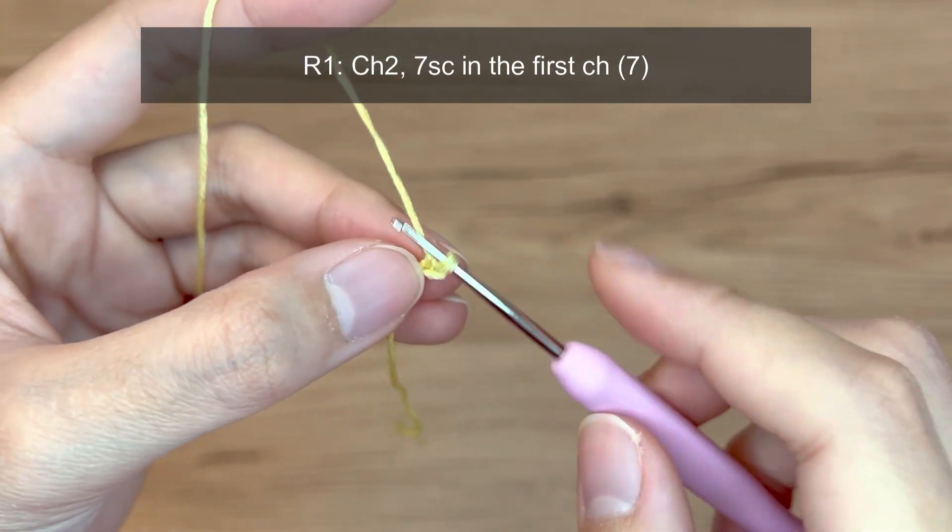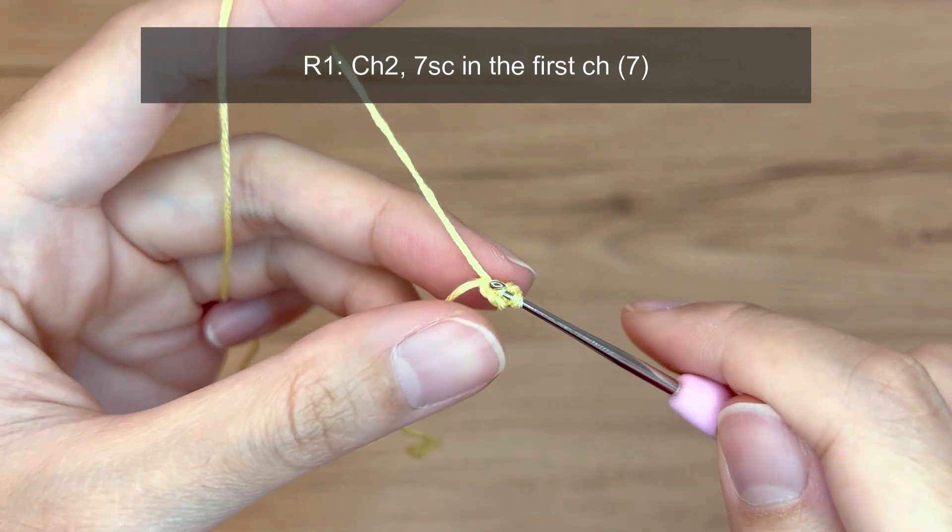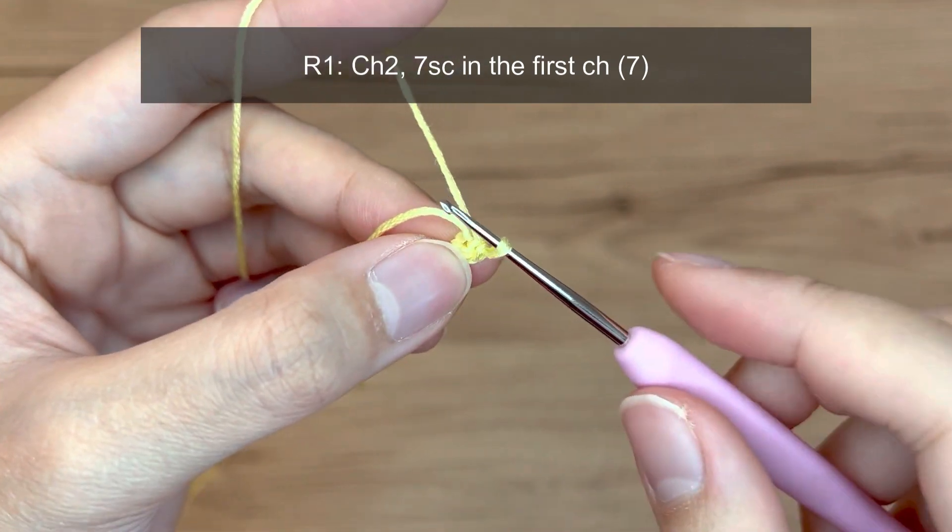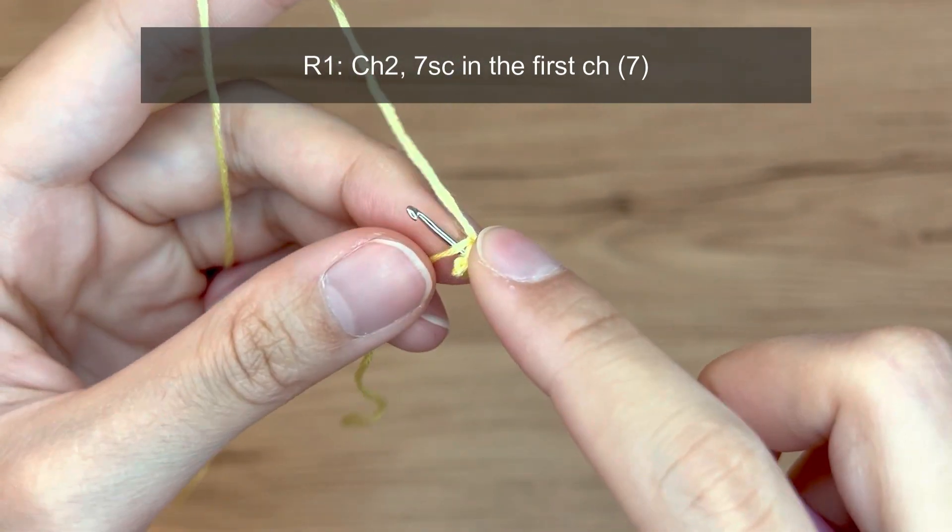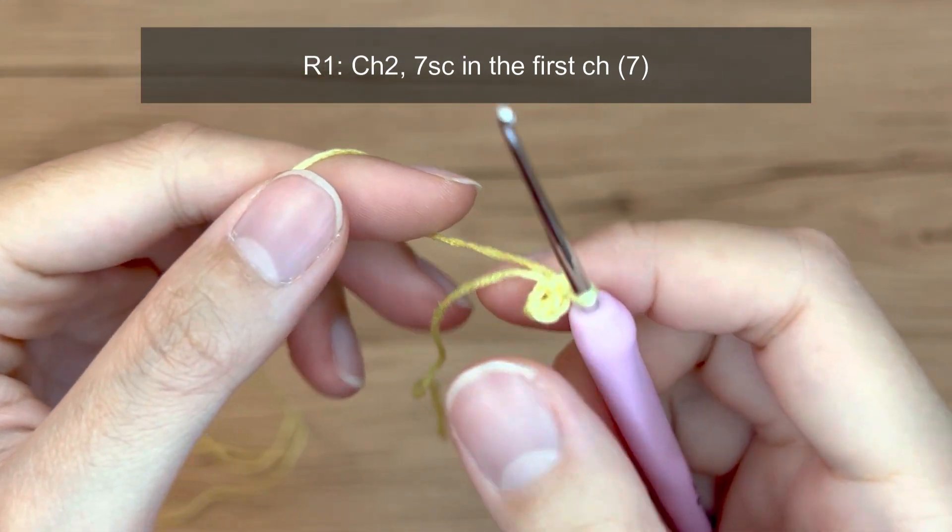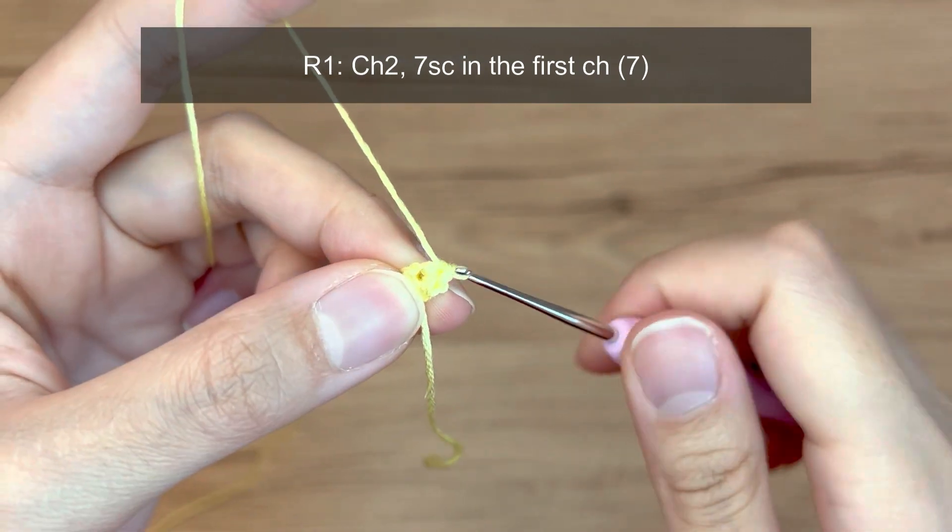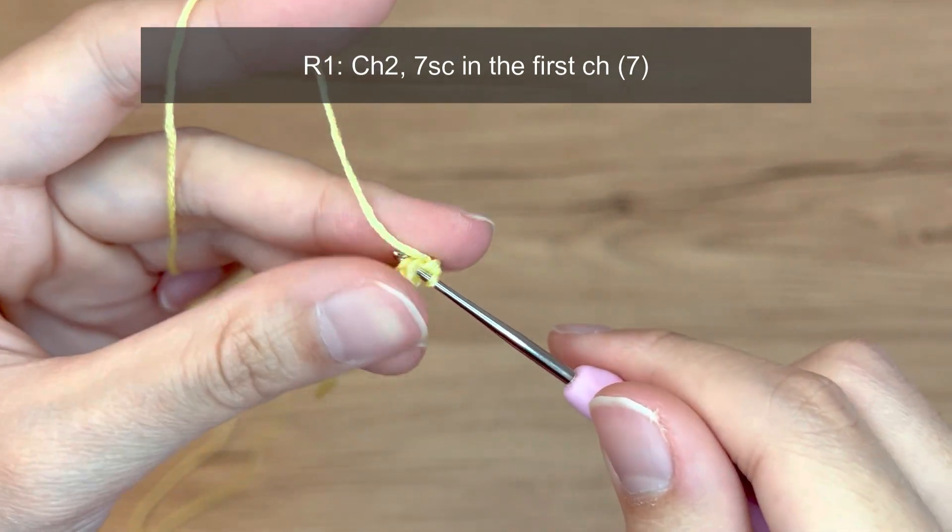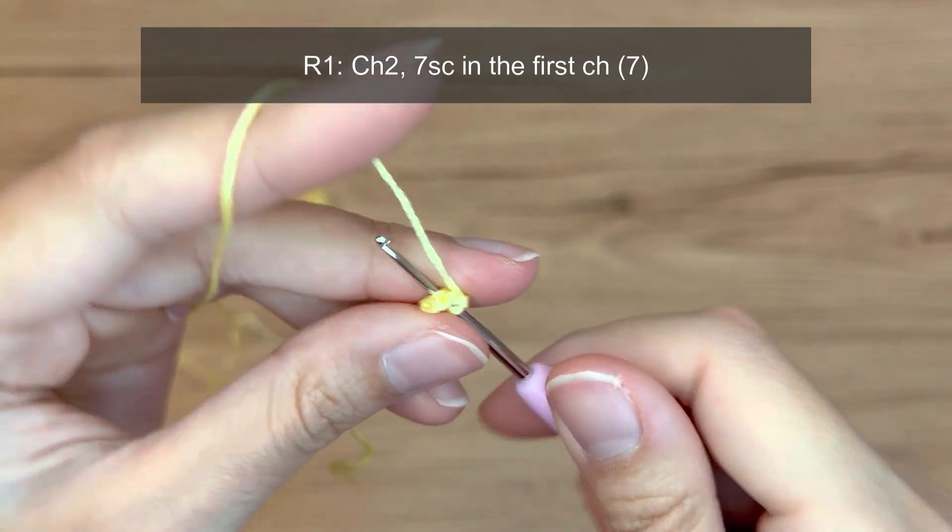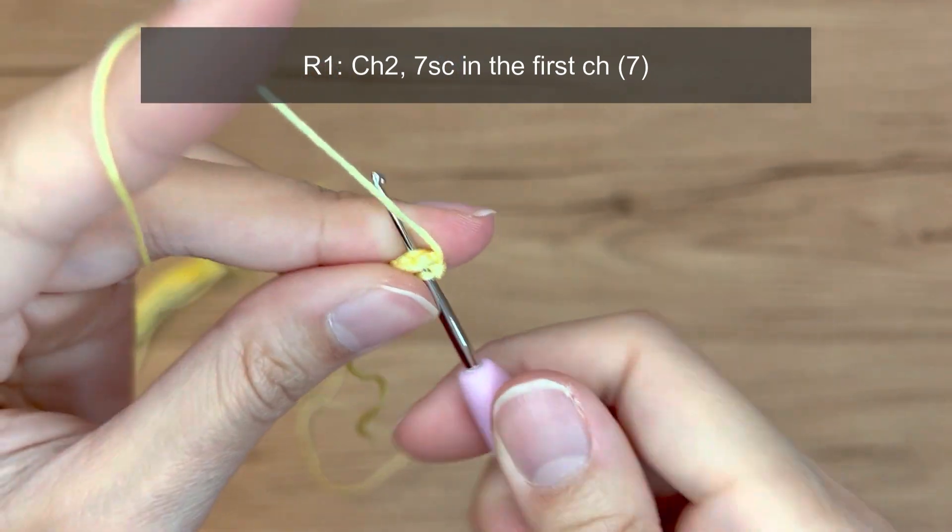So this is called a single crochet. You're going to repeat six more times. So push your hook into that first chain. The same chain again. Yarn over hook and then pull through. You will have two loops. Yarn over hook and then pull through again. So that's second single crochet. Going to keep repeating that. I'm making the third single crochet right now. So pull through and then pull through both loops. That's the third single crochet. And then let's make the fourth single crochet. Now I'm on to the fifth single crochet. Okay, the sixth single crochet. And then the seventh single crochet.